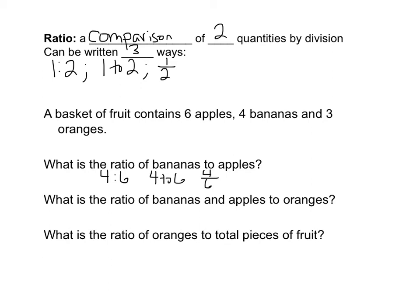So what is the ratio of bananas and apples to oranges? So you're always going to be looking for that keyword two. So this time it's bananas and apples, which would be six plus four, or ten. To oranges, which is three. Or you could write ten, two, three, or ten over three.